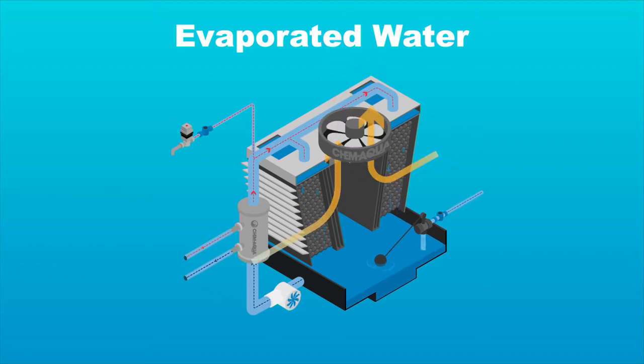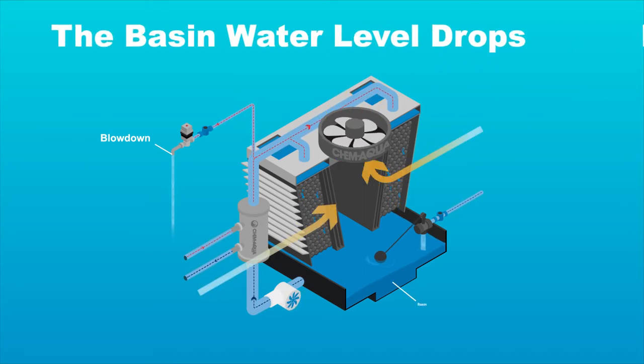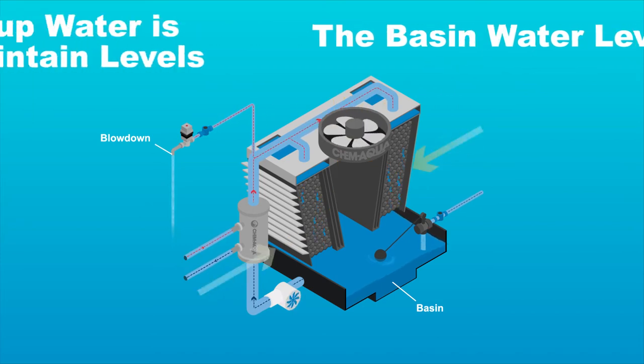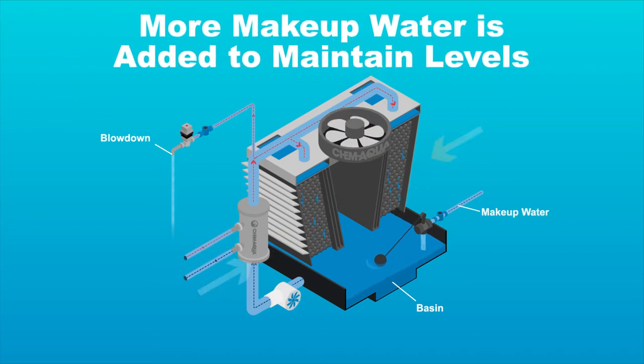Concentrated impurities in the tower water are removed through blowing down a fraction of system water to the drain. The basin water level drops due to these evaporation and blowdown losses, and more makeup water is added to maintain the basin level.